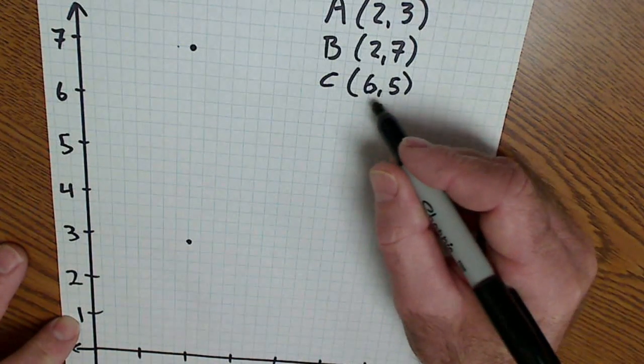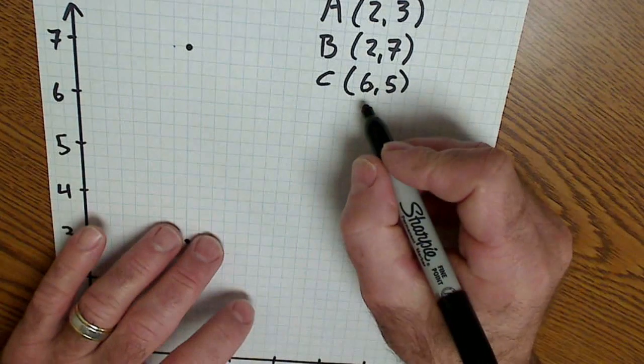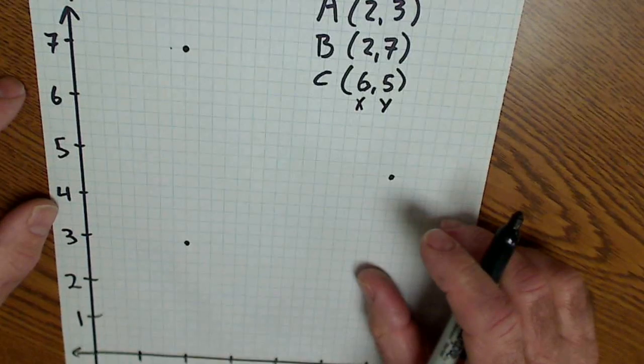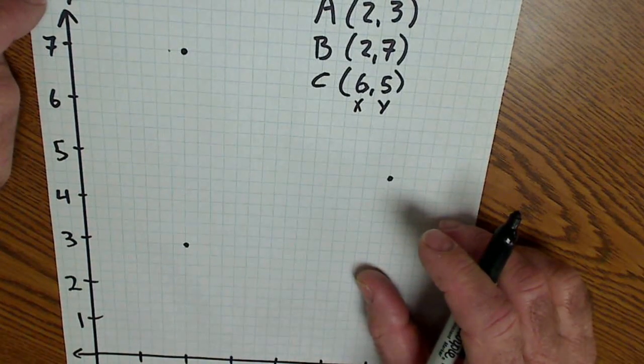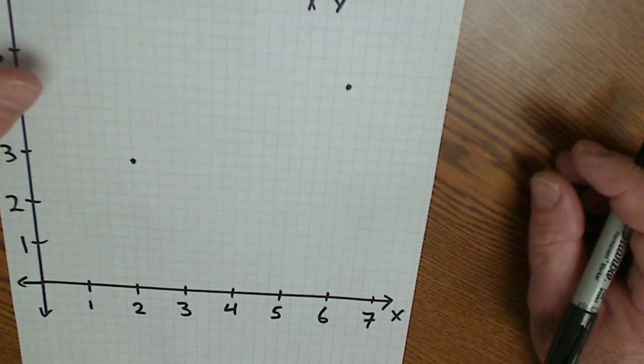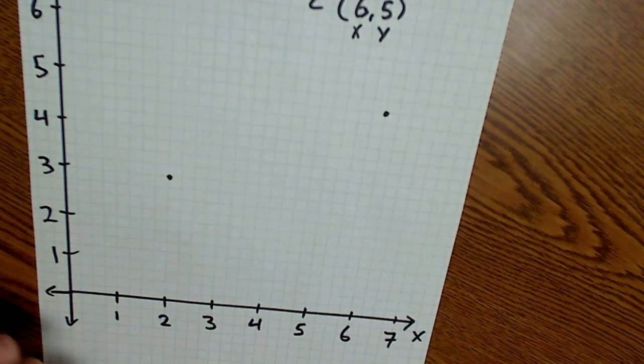So again, this is an ordered pair. First is always X. Second value is always Y. This is on the Cartesian coordinate system. Vertical axis is always Y. Horizontal axis is X. There are four quadrants. I've only drawn the first quadrant here.